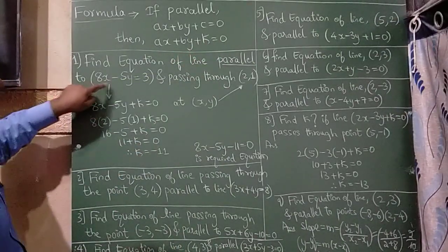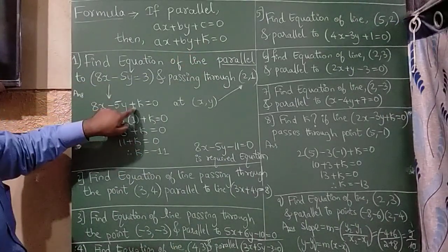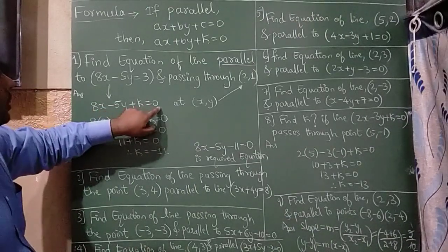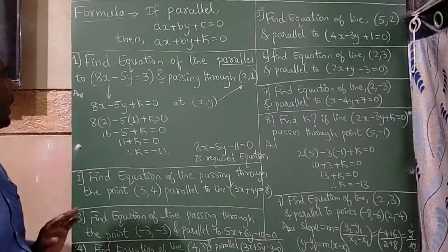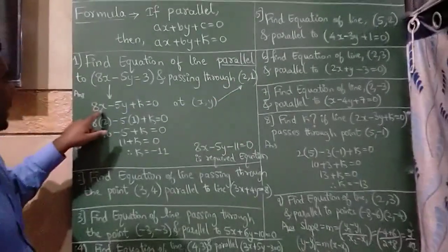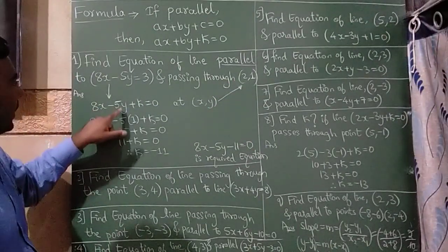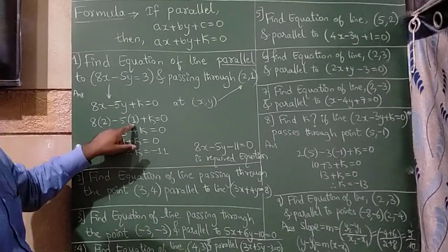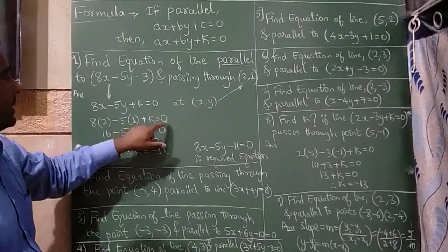So given question is 8x minus 5y so I am going to write plus k is equal to 0 as per the formula. So here x and y values they have given here that is 2 comma 1 in place of x I am going to substitute 2 in place of y I am going to substitute 1 plus k is equal to 0.